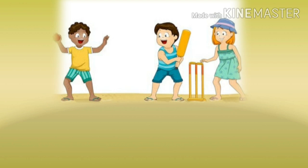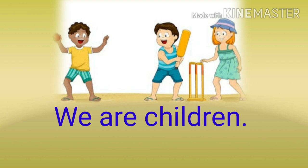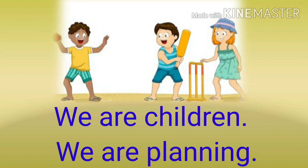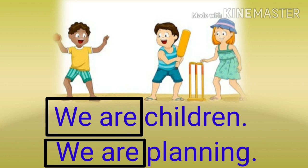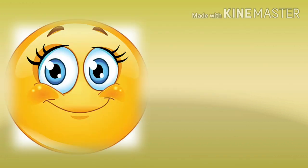આ પિકમાં શું દેખાઈ છે? Children! હાં, જુઓ Children છે — શું કરી રહ્યા છે? રમી રહ્યા છે. ચાલો આપણે એનું વાક્ય બનાવીએ: We are children. We are playing. Friends, આ વાક્યોમાંથી 'We are' ઉપર આપણે box કરીશું: We are children, We are playing.